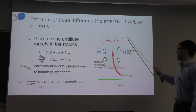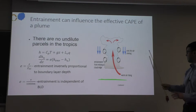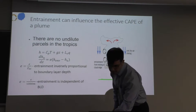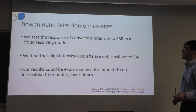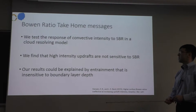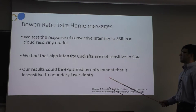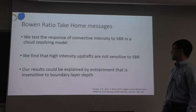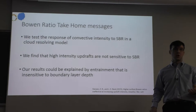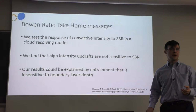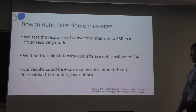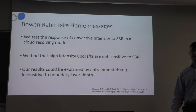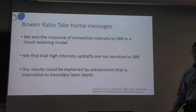Our Bowen ratio take-home messages: we test the response of convective intensity — specifically high-percentile updraft velocities — to Bowen ratio in a cloud-resolving model. We find that high-intensity updrafts are not sensitive to the Bowen ratio; our low Bowen ratio simulations have the same convective intensity as our high Bowen ratio simulations. Our results could be explained by entrainment that is insensitive to boundary layer depth, so the initial hypothesis that deeper boundary layers result in less entrainment turns out not to be true in our case.